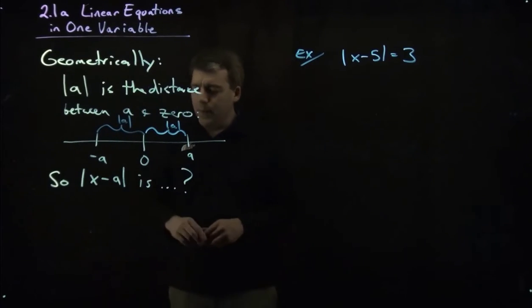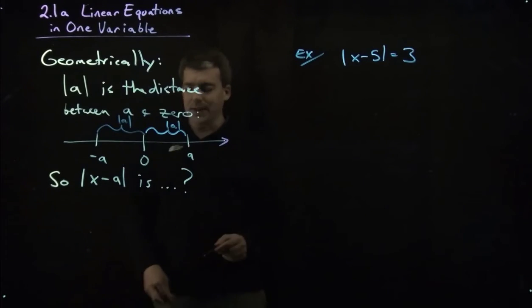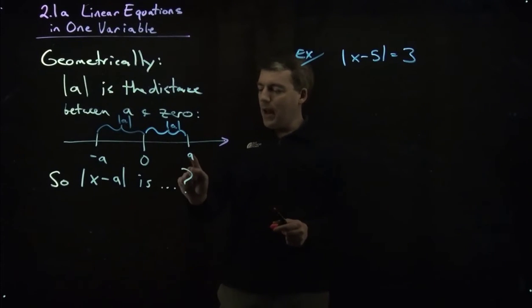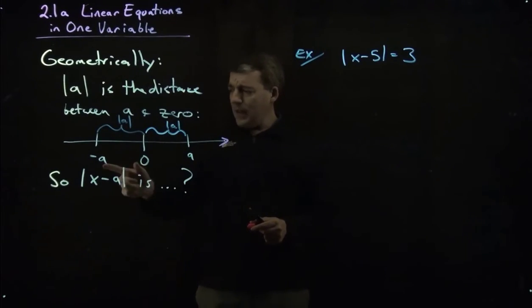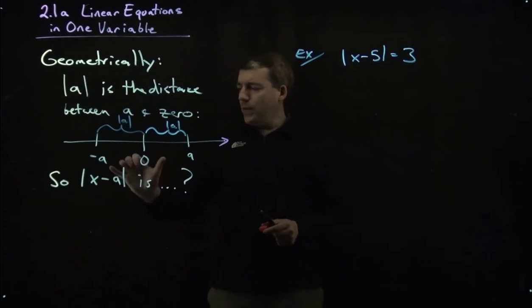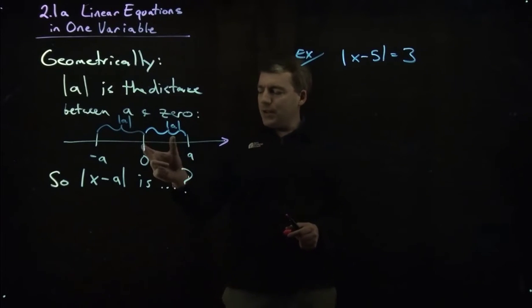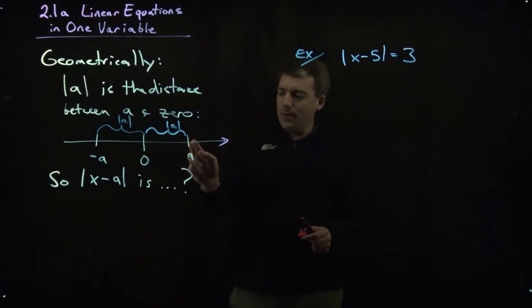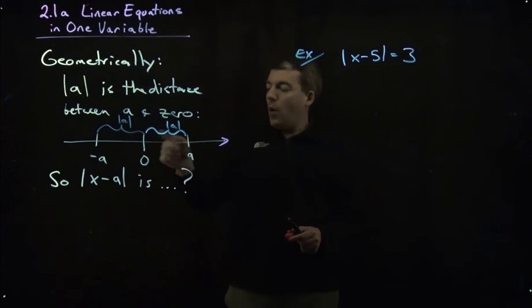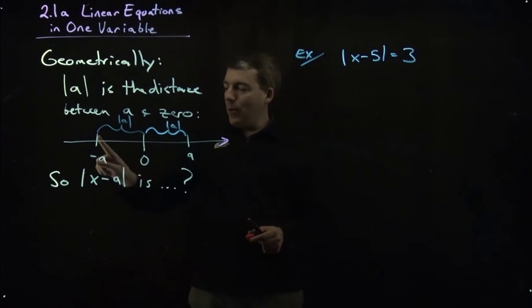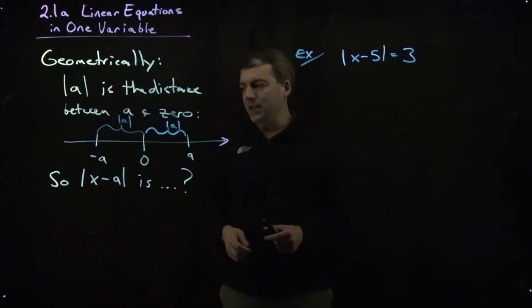So here we have a number line. Let's give it some direction, there's a positive direction. We've got A and the opposite of A, and both of these numbers, the opposite of A and A, are a distance A from zero. So we could start at zero and march out a distance of A, given by the absolute value of A, and reach A. Or we could march the same distance away from zero to the left, and that would also be a distance absolute value of A.